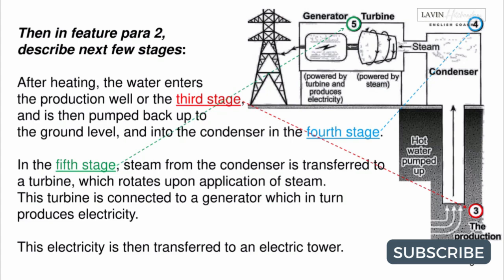Then in Feature paragraph 2, describe the next few stages. After heating, the water enters the production well or the third stage and is then pumped back up to the ground level and into the condenser in the fourth stage.